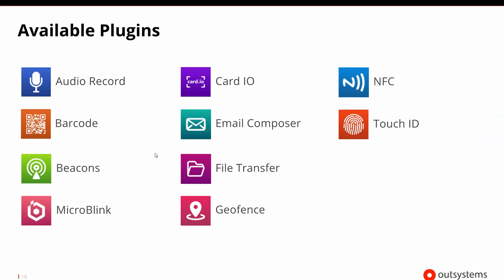So what are the other plugins that are available? There is something to record audio, there's a scanner to help do barcodes, there's something that can detect beacons and tell us our more refined location, Microblink and Card IO do some scanning, composing emails, transferring files, setting up a geofence, doing near field communication, and being able to be more secure by using Touch ID.